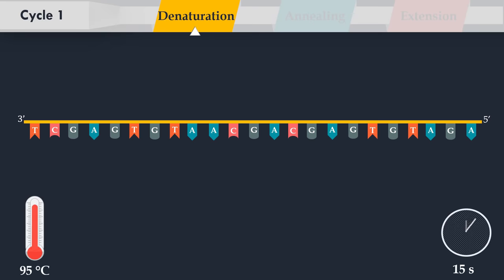Denaturation step consists of heating the reaction chamber to 95 degrees Celsius and is used for denaturation of the double-stranded DNA template.